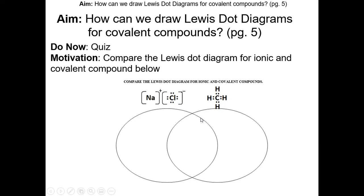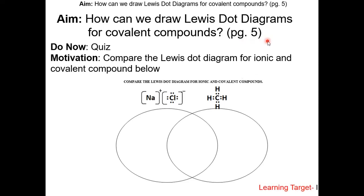This is my second video lesson for the covalent bond unit. I split the topic of Lewis dot diagrams for covalent compounds into three separate lessons. In this lesson, we'll be starting with single bonds. In the next one, we're going to do double and triple bonds. In the third one, we're going to do polyatomic ions. So let's go to page 5 in the class packet.